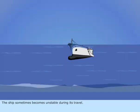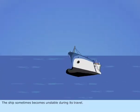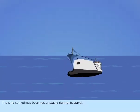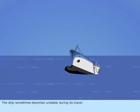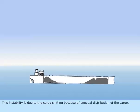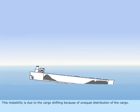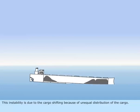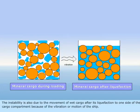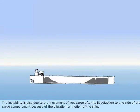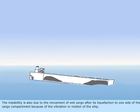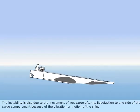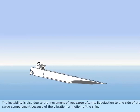The ship sometimes becomes unstable during its travel. This instability is due to the cargo shifting because of unequal distribution of the cargo. The instability is also due to the movement of wet cargo after its liquefaction to one side of the cargo compartment because of the vibration or motion of the ship.